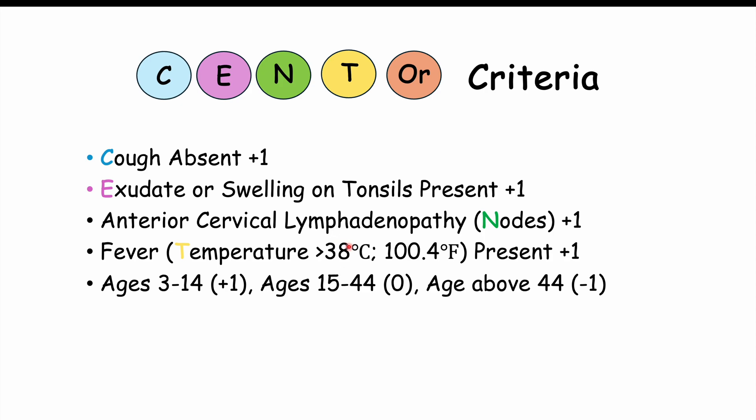If the score is at least three points or more, that will typically prompt a clinician to perform a rapid antigen test. The rapid antigen test has quite high specificity, so a positive result is sufficient to diagnose strep throat. If the score is below three — especially very low — it's unlikely to be streptococcal pharyngitis. Please check out the full lesson on streptococcal pharyngitis, and if you haven't already, please like and subscribe for more lessons like this one. Thanks so much for watching and hope to see you next time.